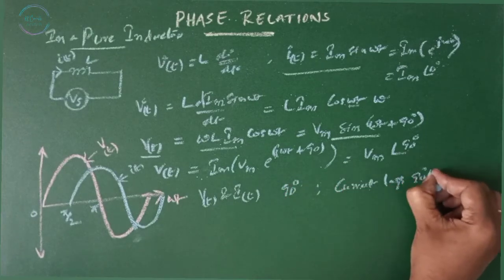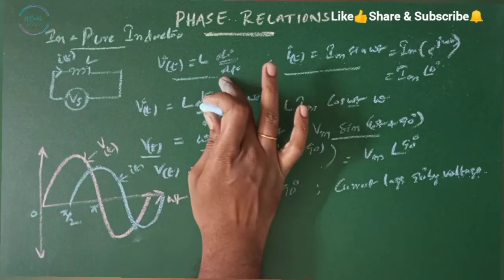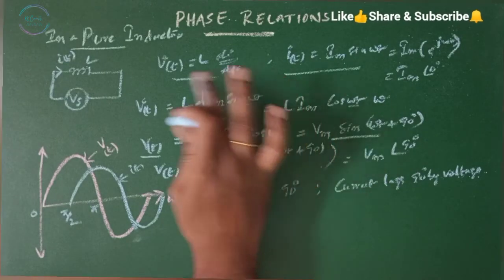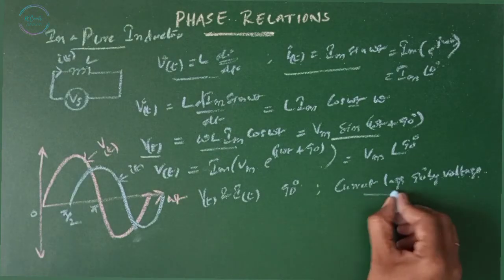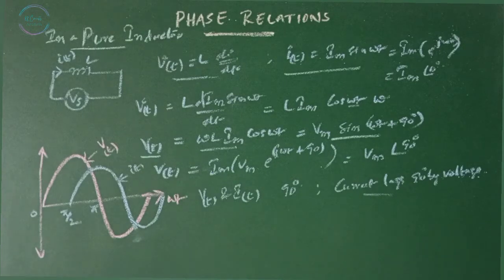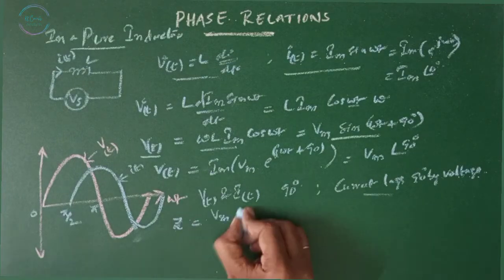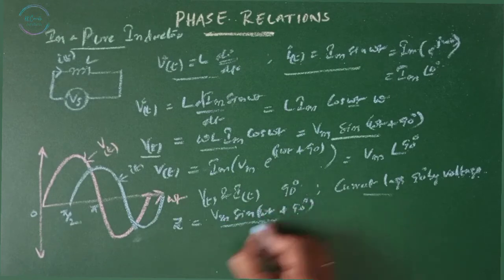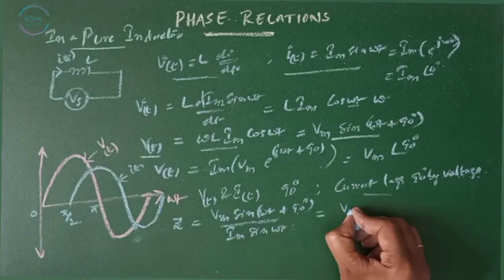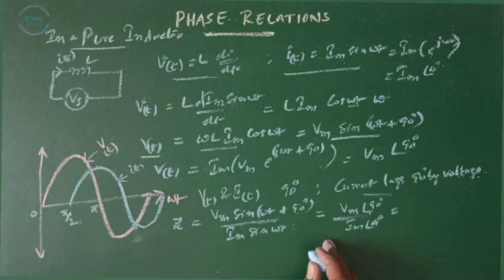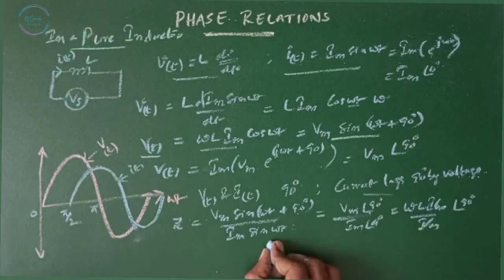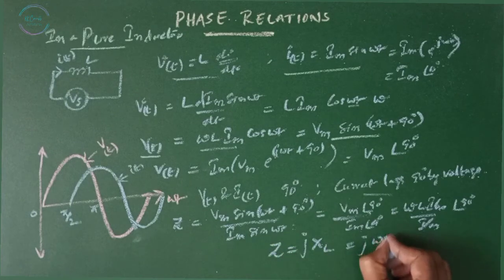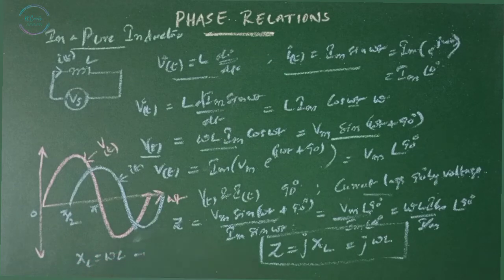Current lags 90° behind voltage. From the definition, an inductor does not allow the change in current instantaneously when there is a finite voltage, which means even when voltage is applied, the current builds up slowly — current lags. The impedance Z equals Vm·sin(ωt+90°) divided by Im·sin(ωt), giving Vm∠90° / Im∠0° = ωL·Im / Im at 90°. Therefore Z = XL = jωL, where XL = ωL is known as inductive reactance.